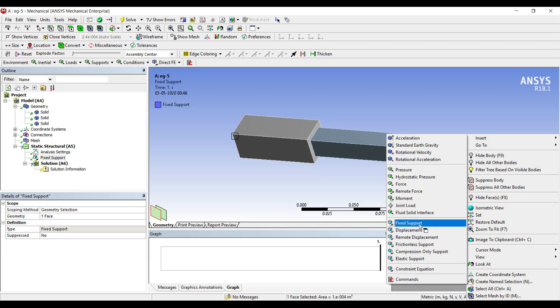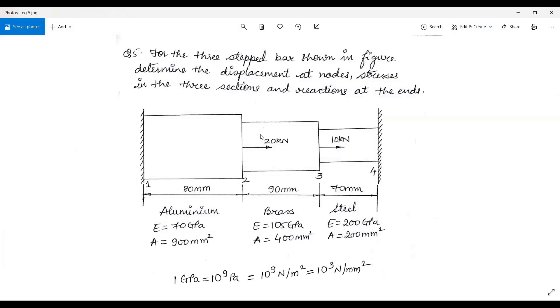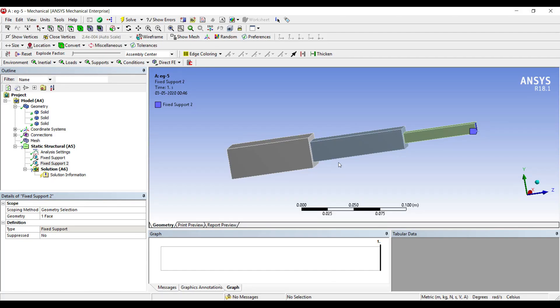Now on this face, if you see there is a load of 20 kN on this face, and on this side there is a load of 10 kN. I have to apply a load of 10 kN, so I will just suppress this body.